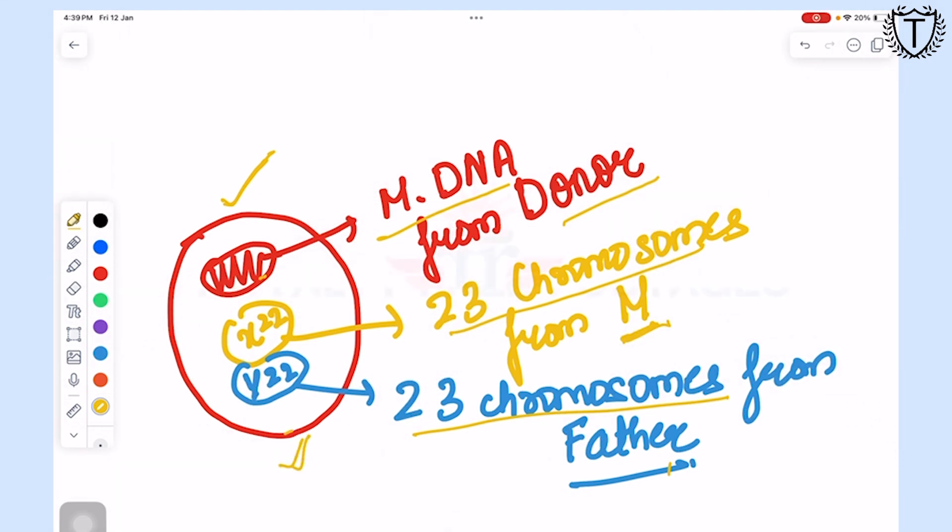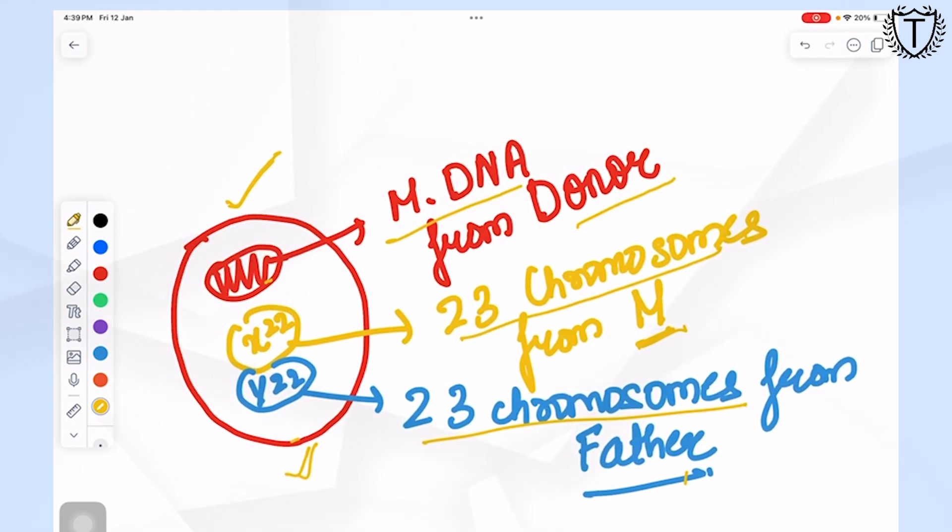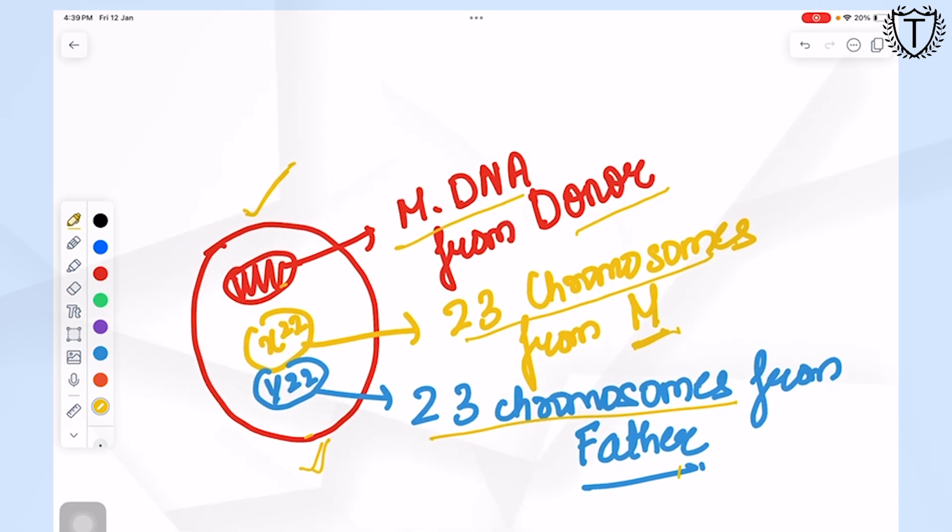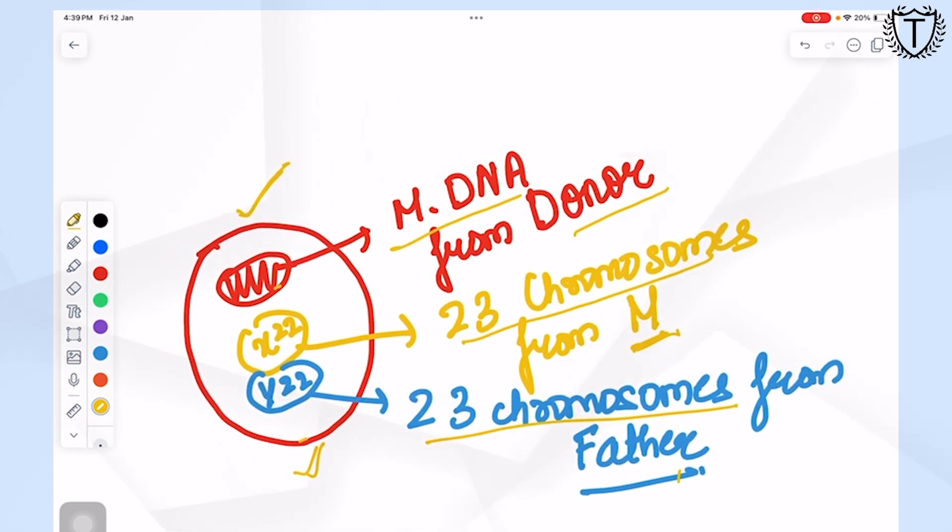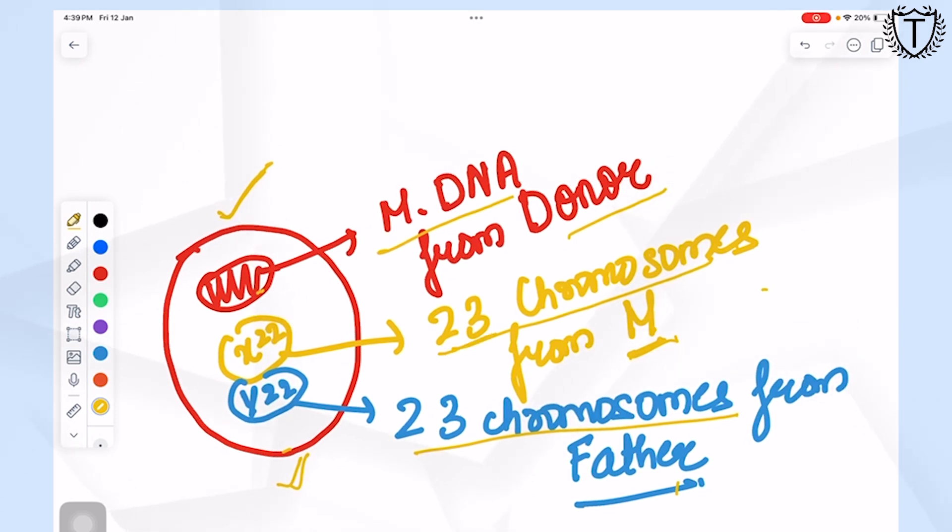We let it rapidly multiply under controlled conditions and that leads to the development of a healthy embryo without a mitochondrial mutation, which we further transfer to the womb of the biological mother who carries the child for the span of 9 months.